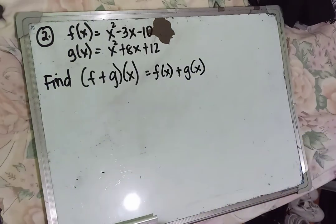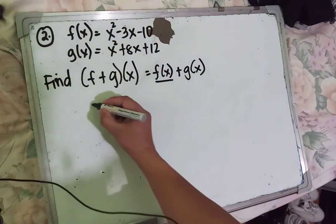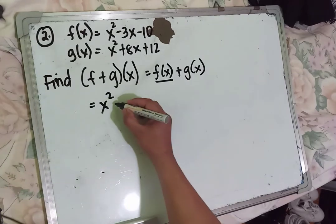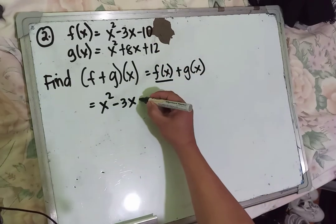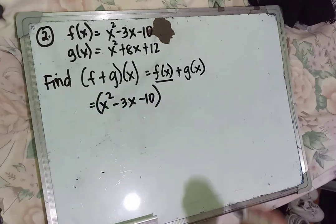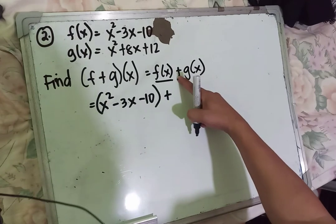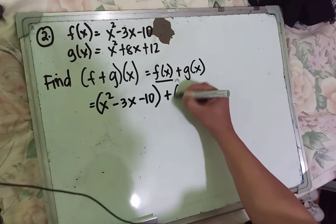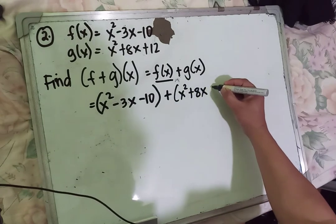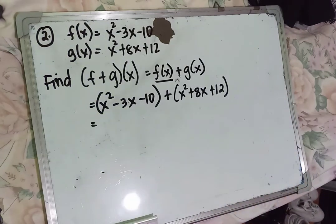Substitute the values: f of x is x squared minus 3x minus 10, plus g of x which is x squared plus 8x plus 12. Next, combine like terms.